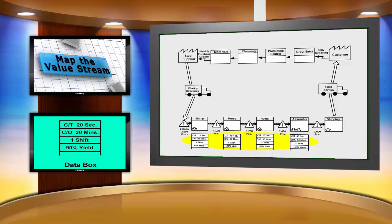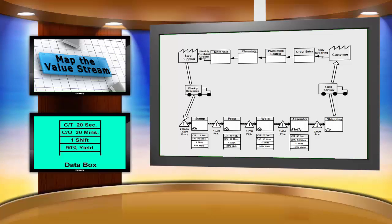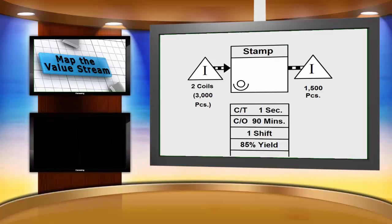Data boxes are used below each of the operations to record information concerning a manufacturing process, department, customer, etc. The next step in our case study is to gather the data for each of the operations. We want to include as much meaningful information as we can find in these data boxes. Let's focus in on the data box for the stamp operation.